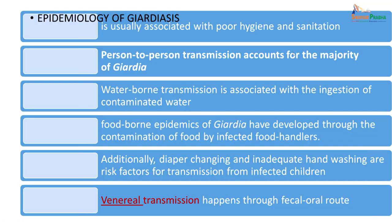Epidemiologically, Giardiasis is usually associated with poor hygiene and sanitation. Person-to-person transmission accounts for the majority of infections. Waterborne transmission is associated with ingestion of contaminated water. Foodborne epidemics have also occurred through contamination of food by infected food handlers. Diaper changing and inadequate hand washing are important risk factors in infected children. Venereal transmission has also been observed through the feco-oral route, all contributing to the endemic nature of Giardia in the environment.